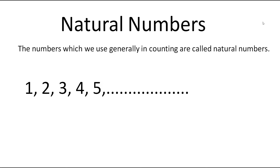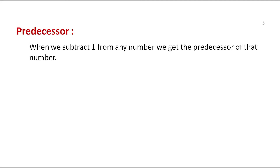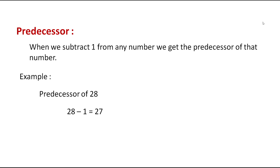The next concept is predecessor. The definition of predecessor is: when we subtract 1 from any number, we get the predecessor of that number. For example, if we have to find out the predecessor of 28, then we subtract 1 from 28. Therefore, 28 minus 1 gives us 27, which is the predecessor of 28.